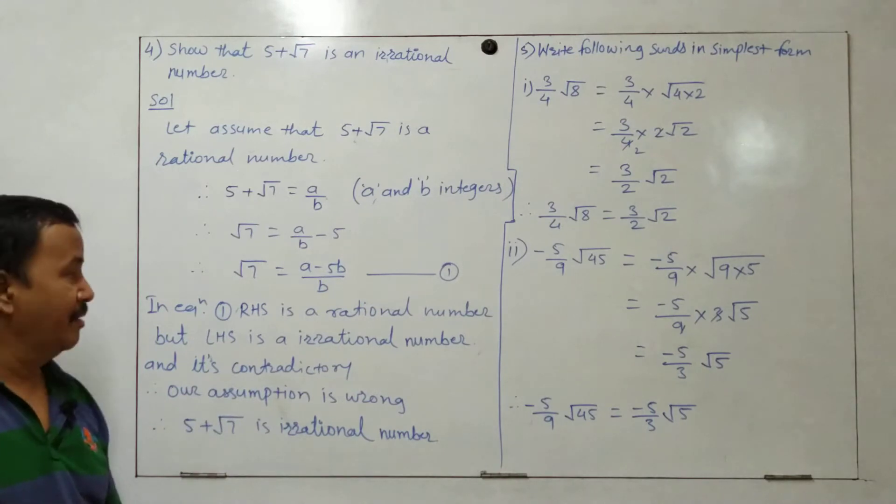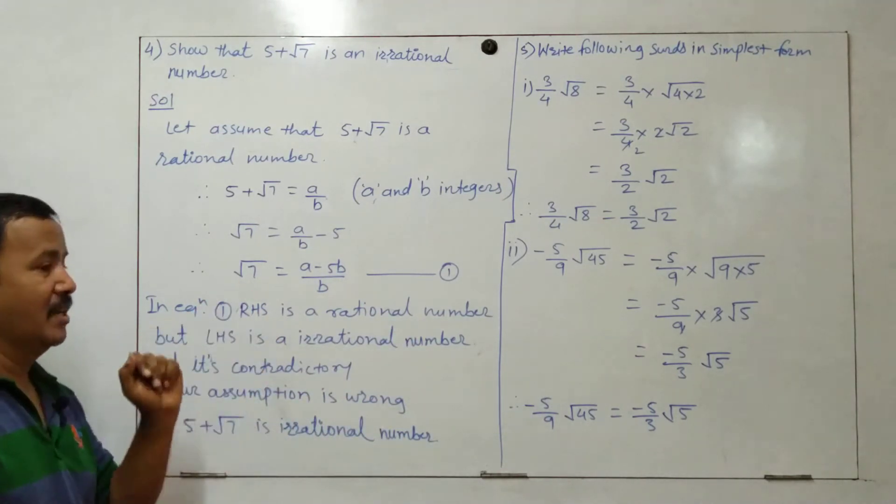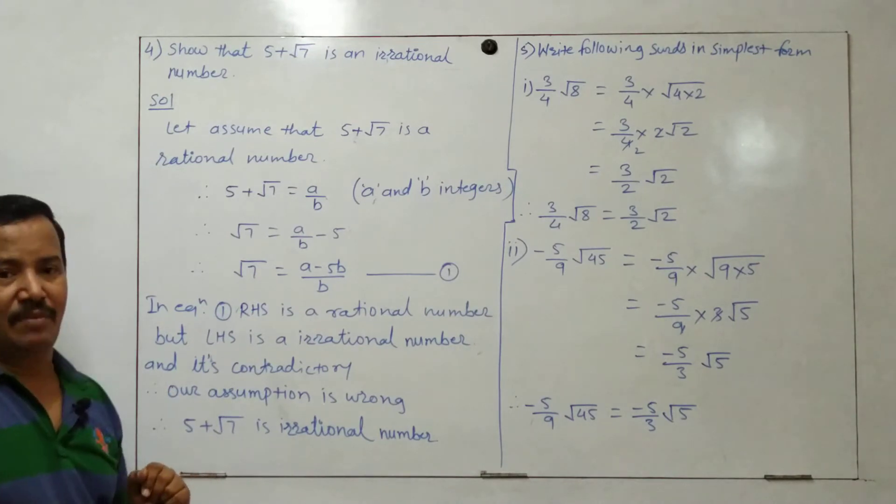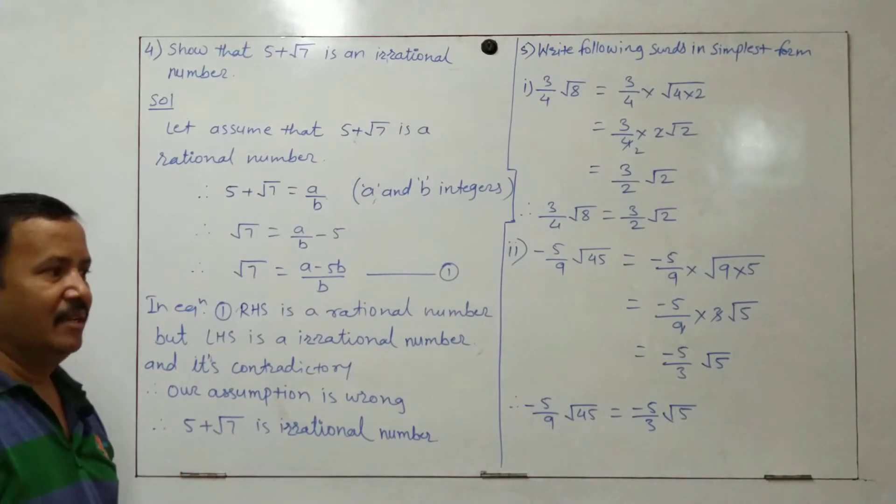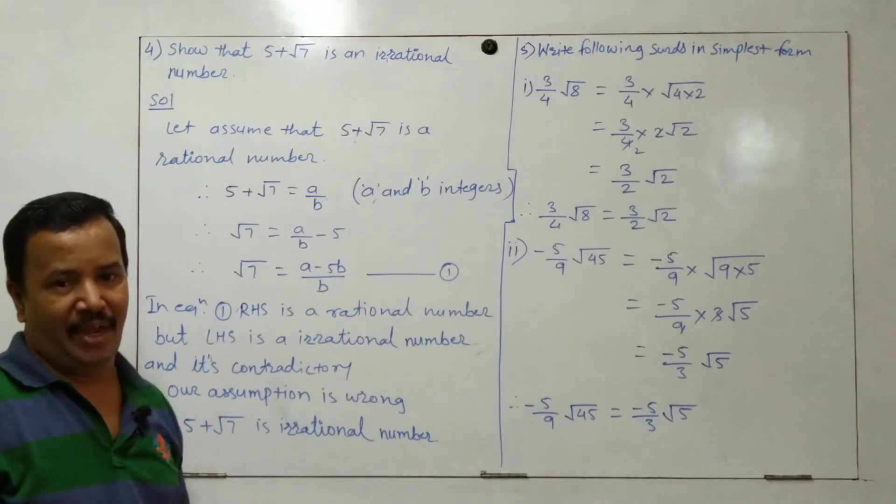The right hand side is a rational number, but the left hand side is an irrational number. Root 7 is an irrational number, and a minus 5b upon b is a rational number.